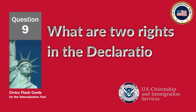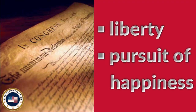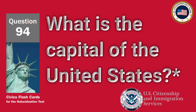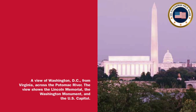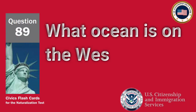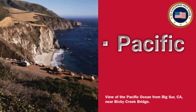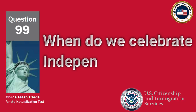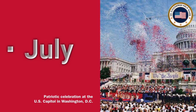What are two rights in the Declaration of Independence? Liberty and pursuit of happiness. What is the capital of the United States? Washington, D.C. What ocean is on the west coast of the United States? Pacific Ocean. When do we celebrate Independence Day? July 4th.